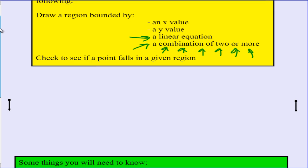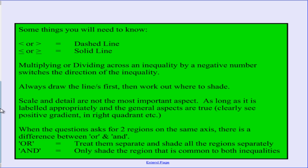To help us, here are some hints and tips. We're no longer using equal signs — we'll have greater than, less than, greater than or equal to, or less than or equal to. When you have only a greater than or less than, draw a dashed line to show the line itself is not included in the shaded region. However, when you have greater than or equal to, or less than or equal to, use a solid line to show the line is included.